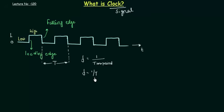Now if I want my circuit to work faster, I need to increase the frequency, or I can say that I need to decrease the time period of the clock.